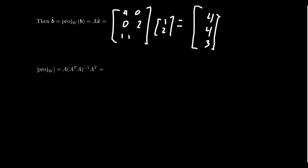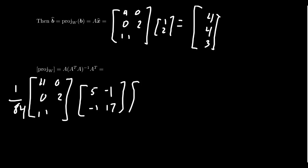If you don't have the least square problem solved already, you can do the orthogonal projection by computing all these things. So we get 4, 0, 0, 2, 11. And like we did before, the inverse of A transpose A, I'm going to write the 1 over 84 above. What was that? We get 5, negative 1, negative 1, 17. And then you have A transpose: 4, 0, 1, 0, 2, and 1.